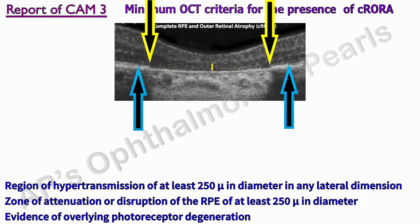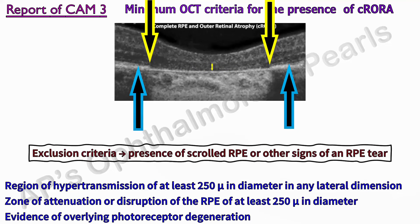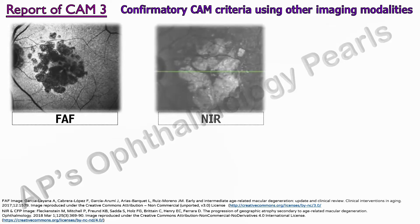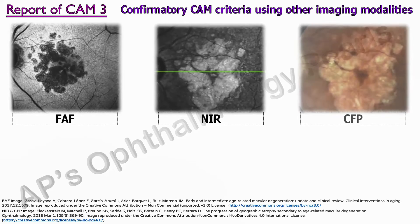Additional features of photoreceptor degeneration include thinning of the outer nuclear layer. The key exclusion criterion is the presence of scrolled RPE or other signs of an RPE tear, because areas of RPE and eventual photoreceptor loss resulting from an RPE tear were not judged to constitute C-RORA. CAM stipulated that in actual clinical practice, some OCT features may be borderline and difficult to classify, in which case additional features from other imaging modalities such as fundus autofluorescence, near-infrared reflectance imaging, and color or multicolor fundus photography may be used for confirmation.